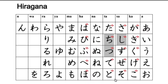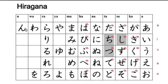Let's review. You know that the first row of hiragana everything ends in 'a' — it rhymes, right? A, ka, sa, ta, na, ha, ma, ya, ra, wa, and then this is an exception: just 'n', it does not end in an 'a' sound.